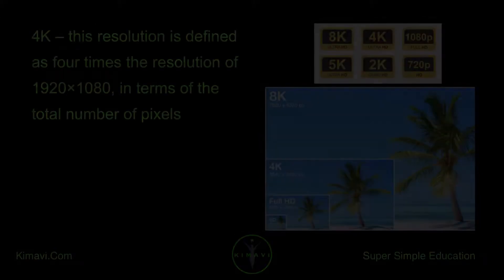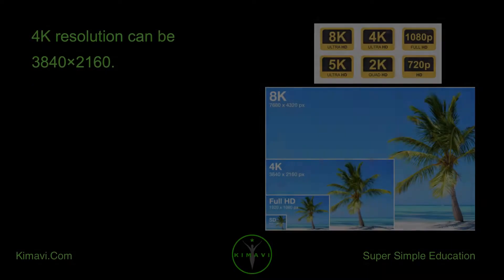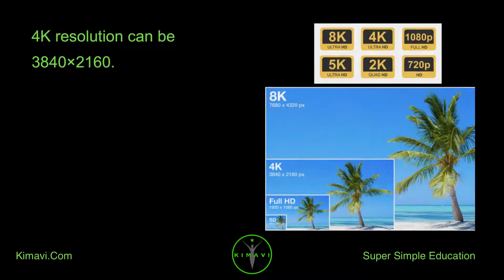What is 4K? 4K is defined as 4 times the resolution of 1920x1080 in terms of the total number of pixels. 4K resolution can be 3840x2160.